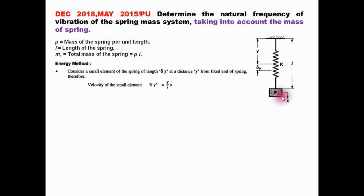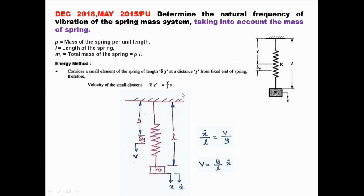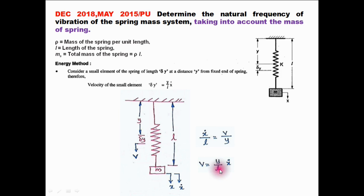This velocity equation is obtained by comparing: total velocity x_dot divided by total length L equals velocity of the small element v divided by its distance from the ceiling y. Reducing, the velocity of the small element is v equals (y/L)·x_dot.